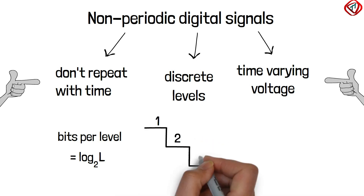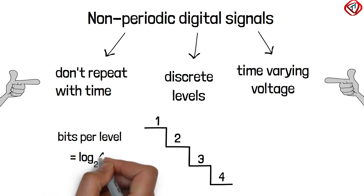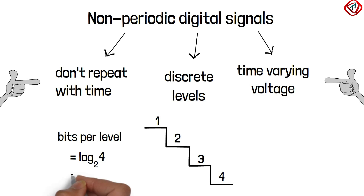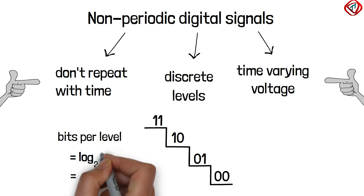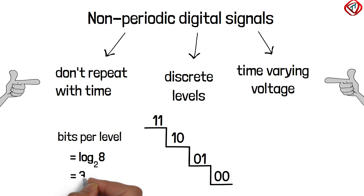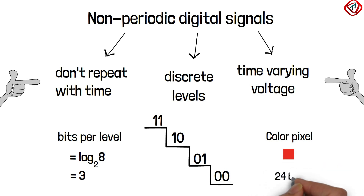Since there are 4 levels in the digital signal, the number of bits per level is log to base 2 of L, which comes out to be 2. So each level can send 2 bits. Similarly, if there are 8 levels, the number of bits each level can transmit is log to base 2 of L, that is 3. Please note that the number of bits to represent 1 color pixel is 24.